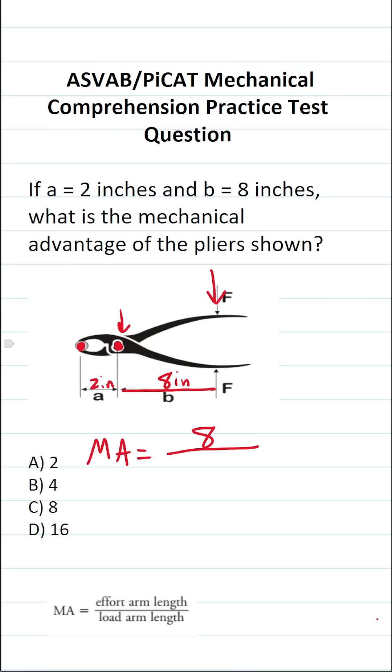And it's going to be the distance that that load is away from the fulcrum. And we can see that it is 2 inches away from the fulcrum. So load arm length is 2.